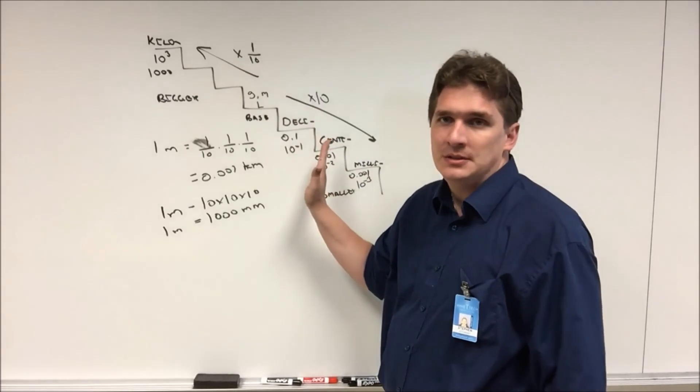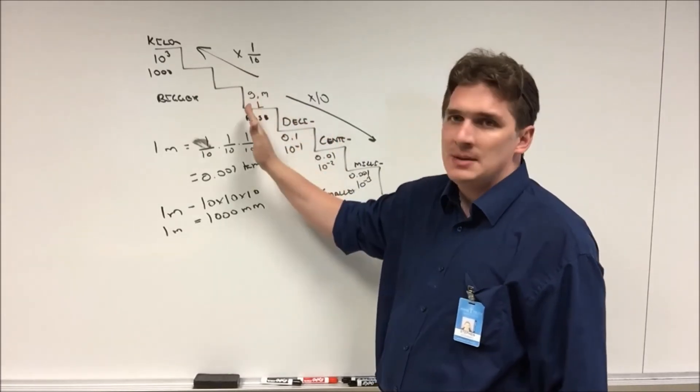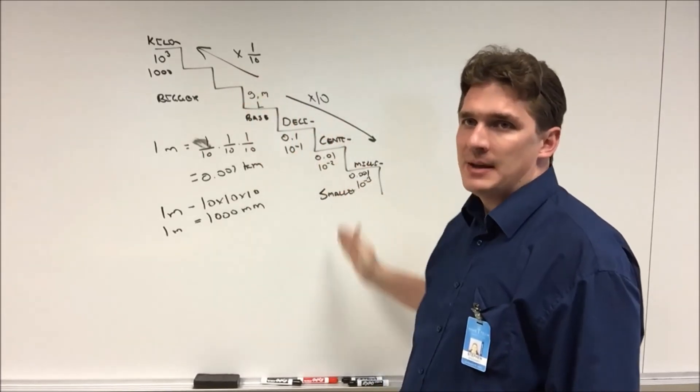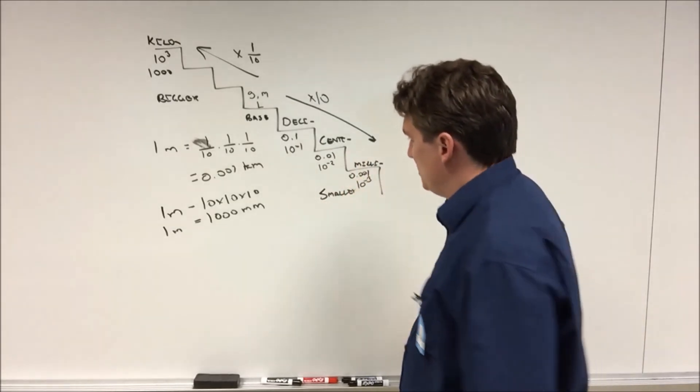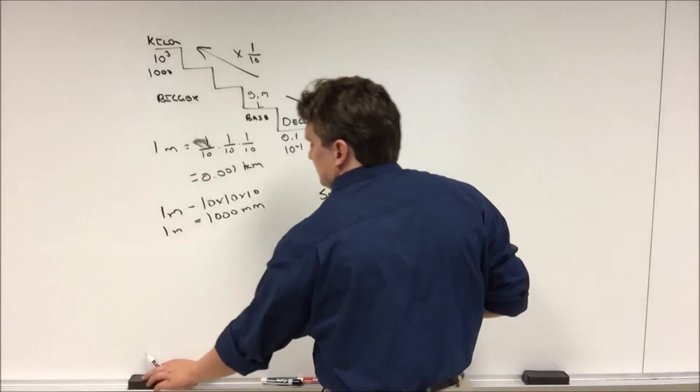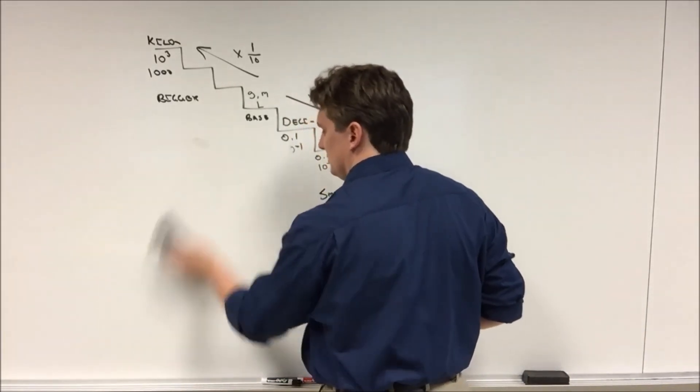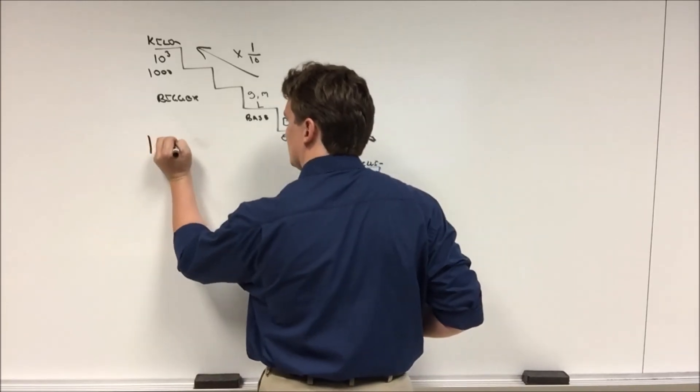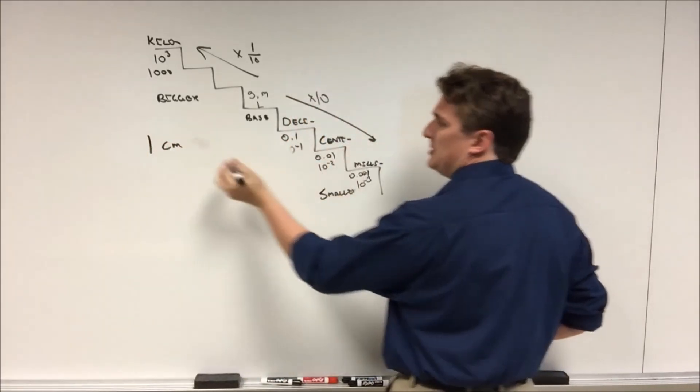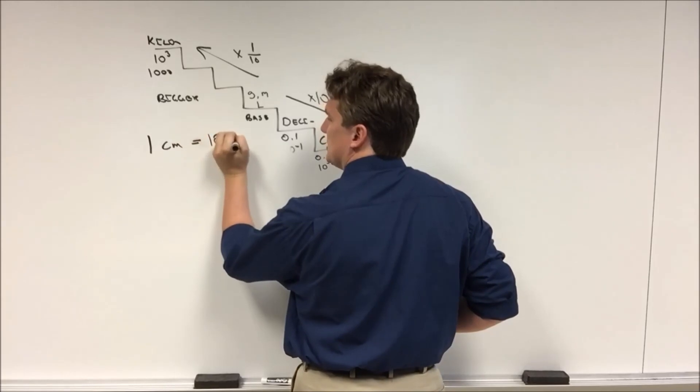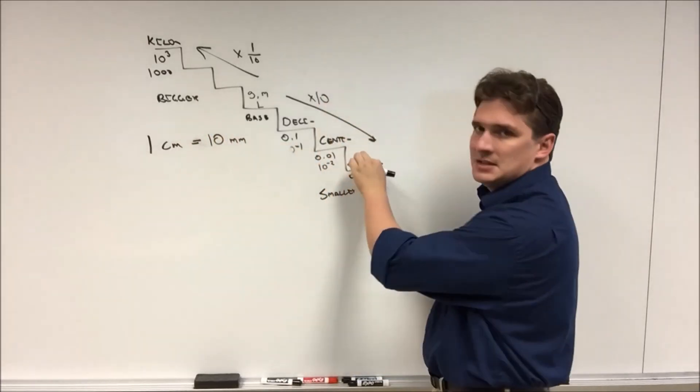So this is how the metric staircase works. Figure out what unit you're in, and then every time you have to move up, divide by 10. Every time you move down, you multiply by 10. So if we want to go from centimeters and we want to go to millimeters, the only thing we have to do is multiply by 10. So this will tell us one centimeter is 10 millimeters.